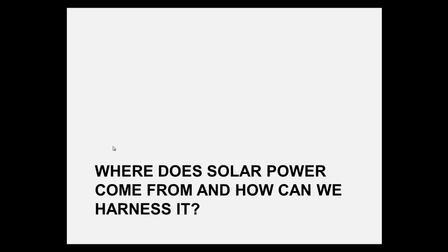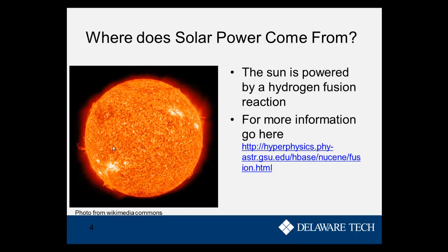Before we dig into more details about solar power, we want to talk about where solar power comes from and how we can harness it. Solar power obviously comes from the sun, but how does the sun generate power? The sun actually generates power from a hydrogen fusion reaction. You can go to the HyperPhysics website for more information, but the idea is that two hydrogen atoms come together and produce a helium atom and energy at the same time. We'll go over this more when we talk about nuclear power.